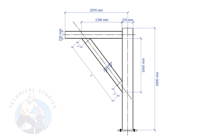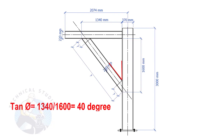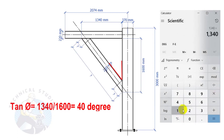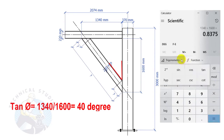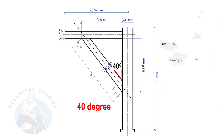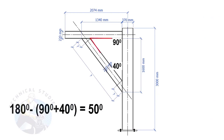Let us calculate the included angles. tan(θ) equals 1340 divided by 1600, so the angle is 40 degrees. Since this angle is 90 degrees, this other angle is 180 minus 90 minus 40, which equals 50 degrees.